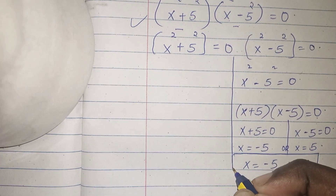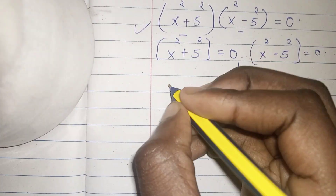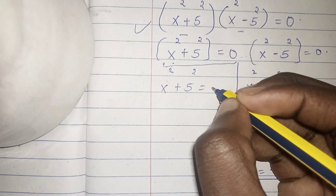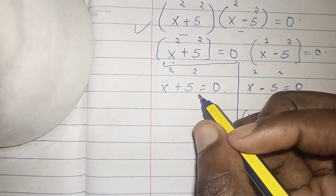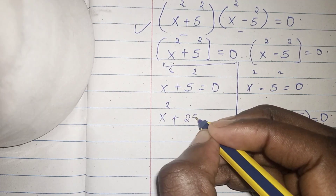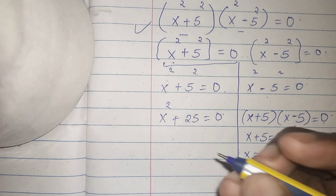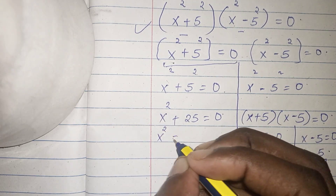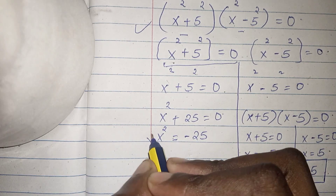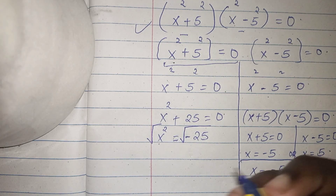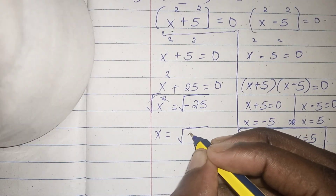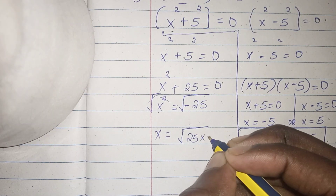Now from the other factor we have x squared plus 5 squared equals 0. That gives us x squared plus 25 equals 0, so x squared equals negative 25. To get the value of x, we square root both sides. The square cancels with the square root, giving us x equals the square root of 25 times negative 1, which is the square root of negative 25.